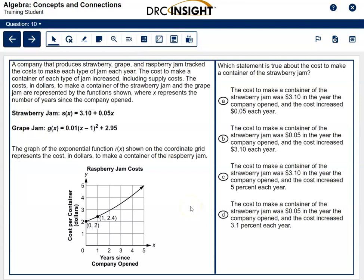Here we have three functions: strawberry, grape, and raspberry jam. But the question here does not mention the others. It's really just talking about strawberry jam. It says, which statement is true about the cost to make a container of strawberry jam?